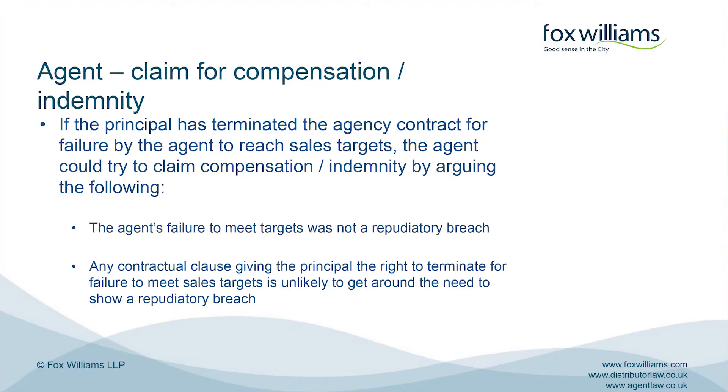So where does this leave the agent whose agency contract has been terminated as a result of a failure to achieve sales targets? It's going to depend. It is possible for an agent's failure to achieve sales targets to be a repudiatory breach. If the agent fails to achieve sales targets by a spectacular margin and there are easy comparators — for example, if the principal has six agents covering various territories in the UK and one agent spectacularly misses while all the others are meeting or exceeding targets — then it's easier for the principal to argue that this one agent's failure is a repudiatory breach. There is no general rule that failure to meet sales targets can never be a repudiatory breach. It can be.